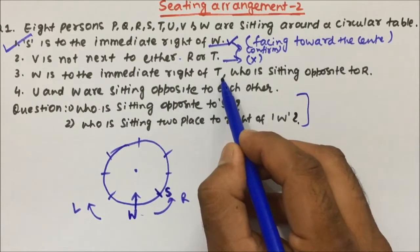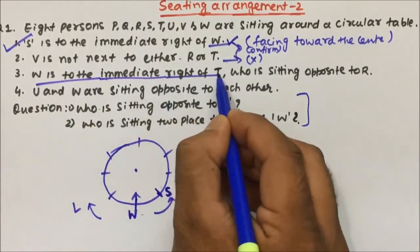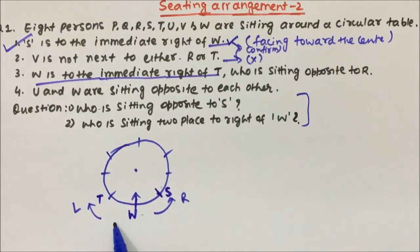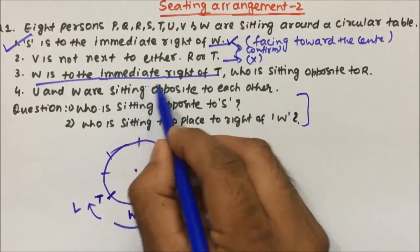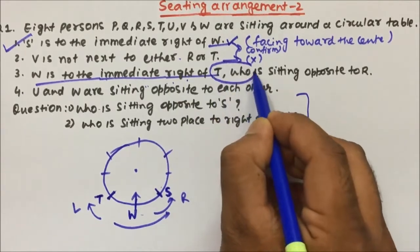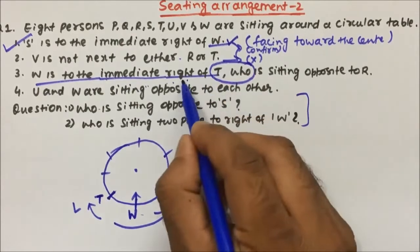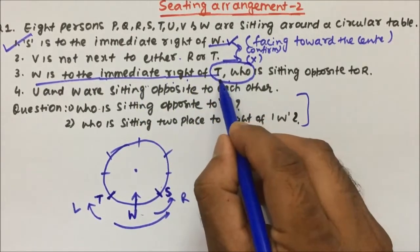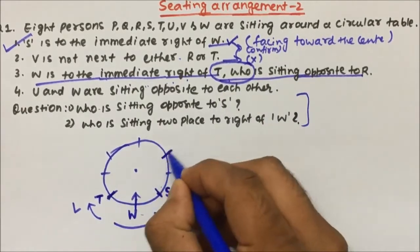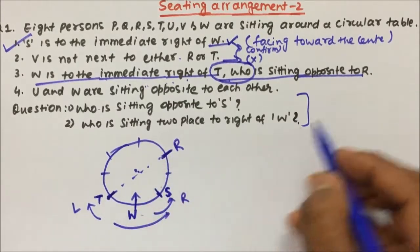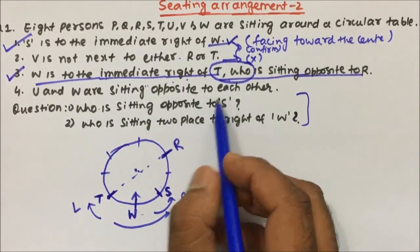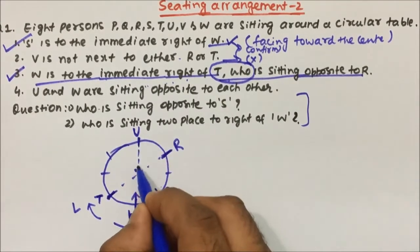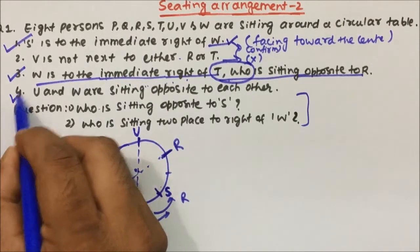W is to the immediate right of T. If we place T here, then W must be the very next person to T's right, so T is placed accordingly. The statement continues: T is sitting opposite to R, so we place R directly opposite T. Next, U and W are sitting opposite to each other — W is here, so U is placed directly opposite W. These are all confirmed statements and are now drawn.